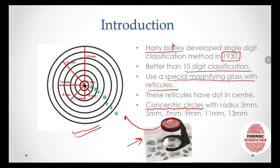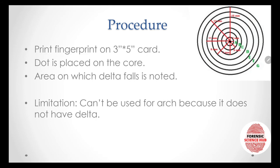On the reticule surface there are concentric circles with different radii. In the middle there is a dot at the center. Then comes the first circle with a radius of 3mm, then 5mm, then 7mm, then 9mm, then 11mm, then 13mm, and finally 15mm. These concentric circles are also labeled A, B, C, D, E, F, and G. That is how Batley's magnifying glass looks.